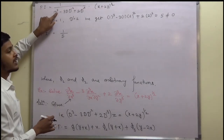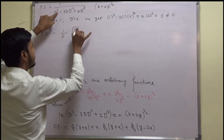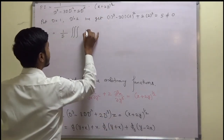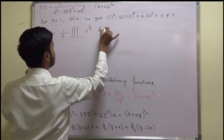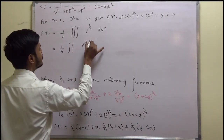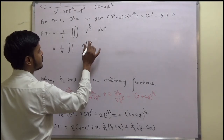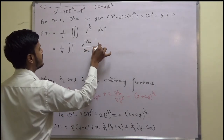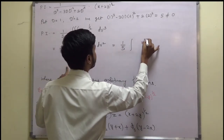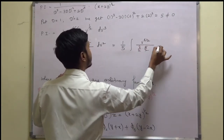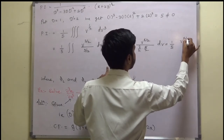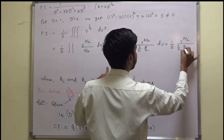Since the result is non-zero (= 5), PI = (1/5) times the integral. The order of the differential equation is 3, so we take 3 integrations. Let v = x + 2y. Then PI = (1/5) ∫∫∫ v^(1/2) dv³. First integration: v^(3/2) / (3/2). Second integration: v^(5/2) / (3/2 · 5/2). Third integration: v^(7/2) / (3/2 · 5/2 · 7/2).